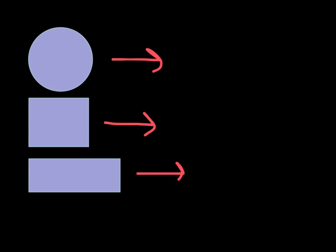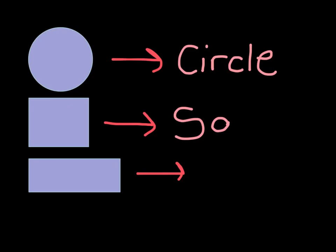The question is: what are these shapes? The first one is a circle. The second shape is either a rectangle or a square, but since all four sides are the same, we know that this one is a square. The last shape — it could be a rectangle or a square, but since the two opposite sides are the same, this is a rectangle.